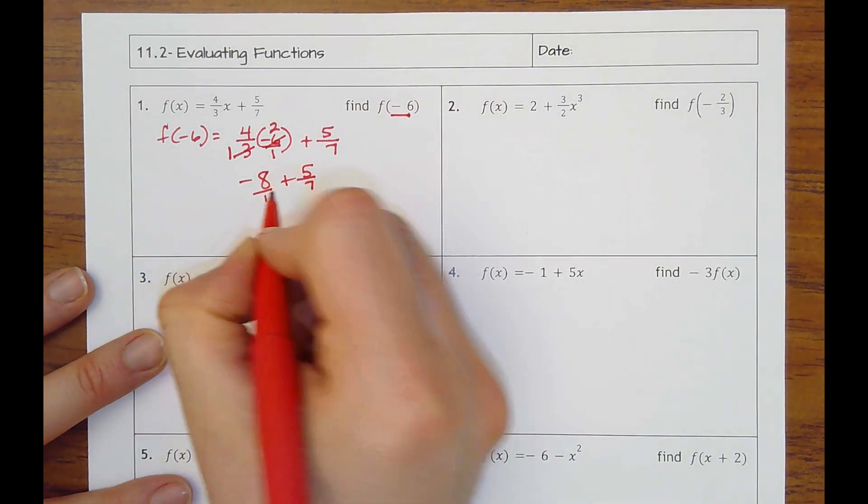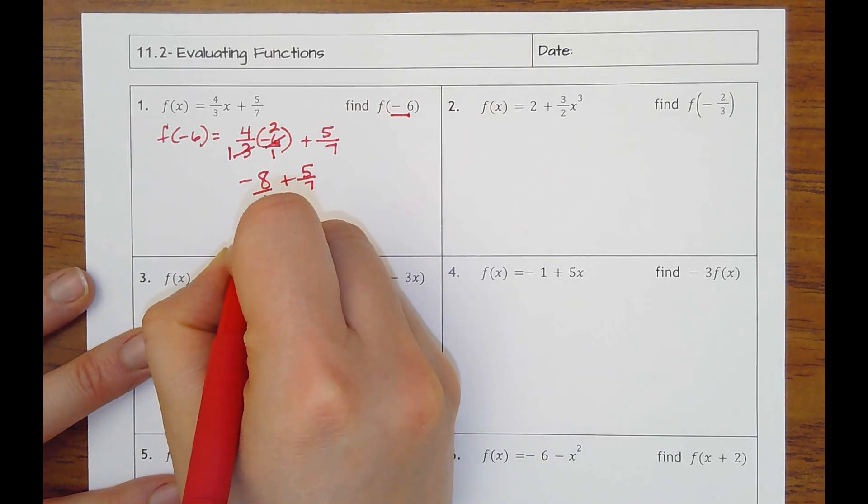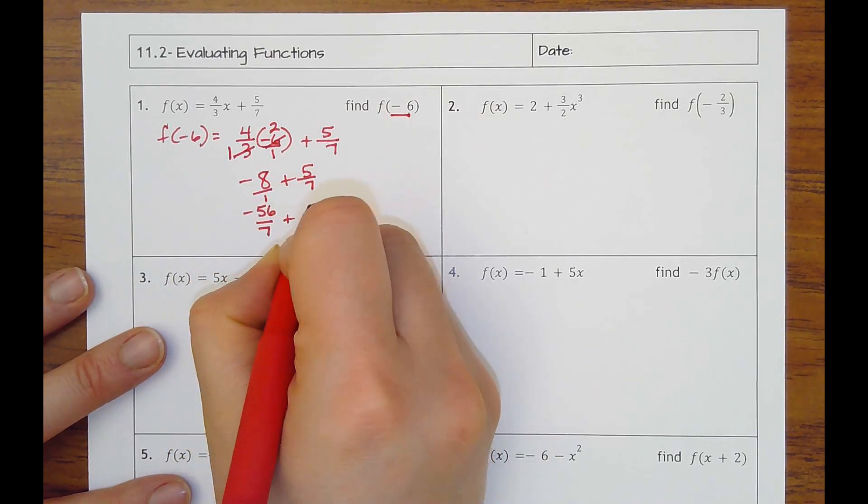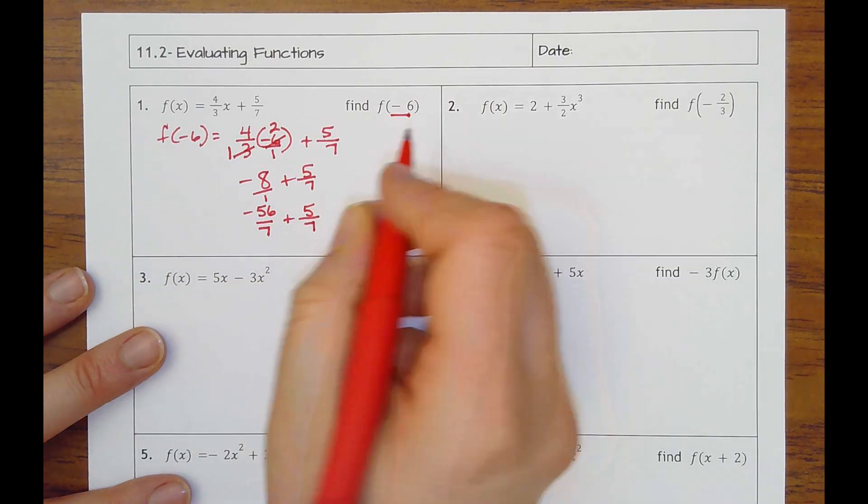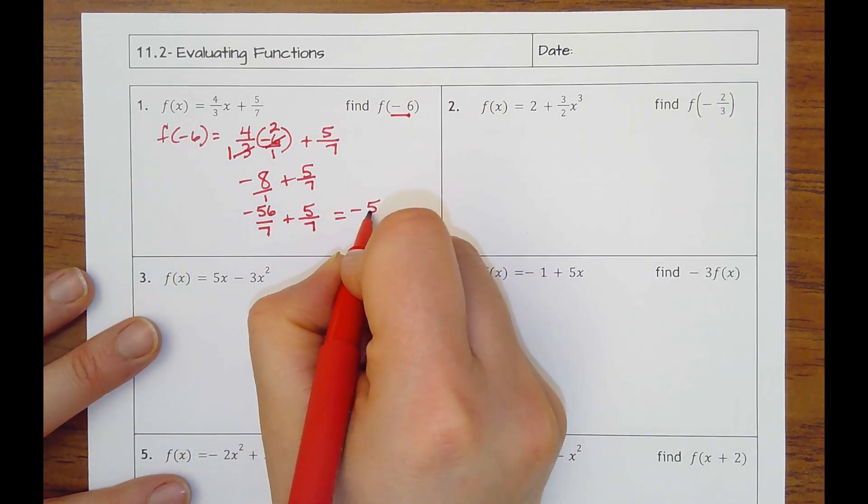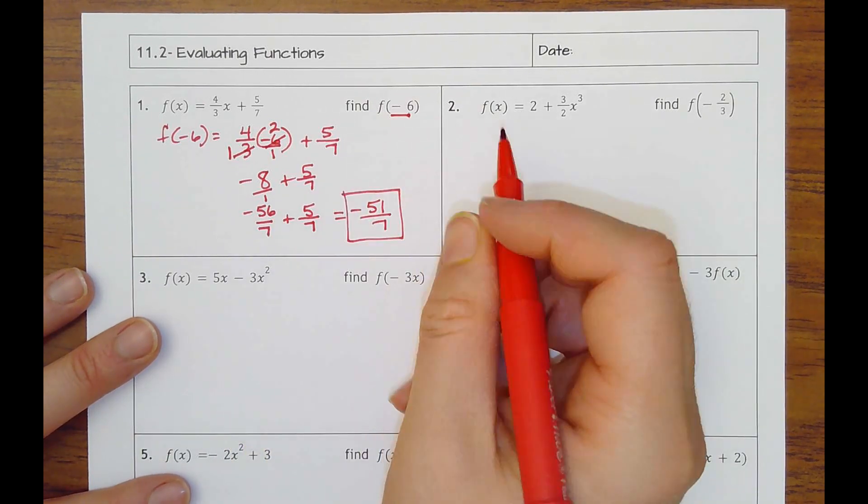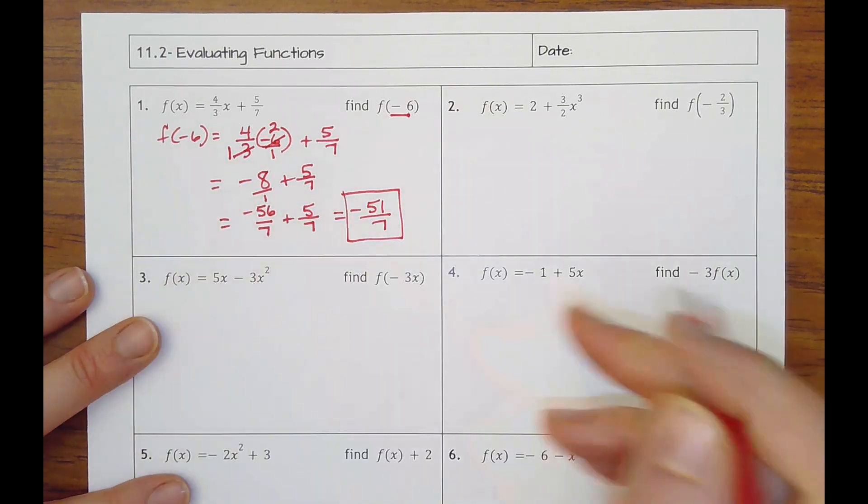And then this is over one to make it have a common denominator of seven. I would have to take negative eight times seven, which is negative 56 sevenths plus five sevenths. Negative 56 plus five would be negative 51 sevenths. If that is difficult for you, you can just do it on a calculator.